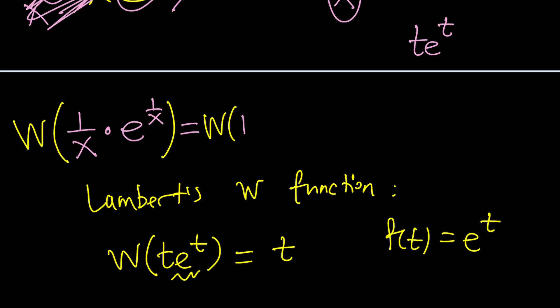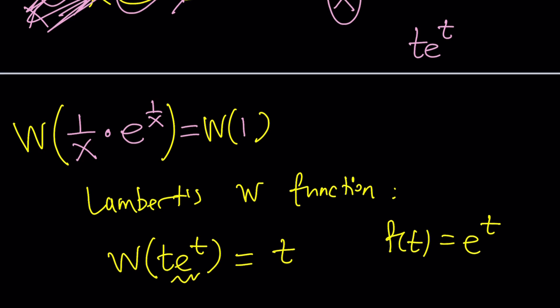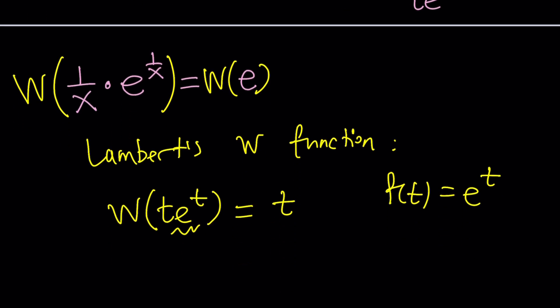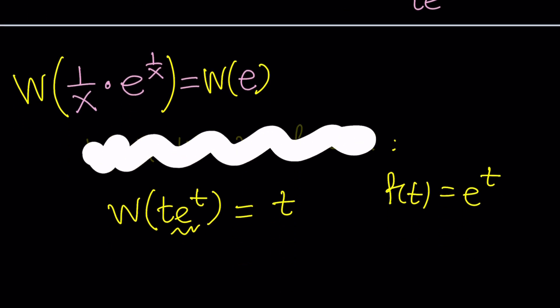So now my expression is ready to use Lambert's w function because now I can w this side and I can w this side. As you should know, oh, by the way, that's not 1. That should be e. I don't know why I wrote 1 there. It's supposed to be e. So let's e it. There you go. Awesome.